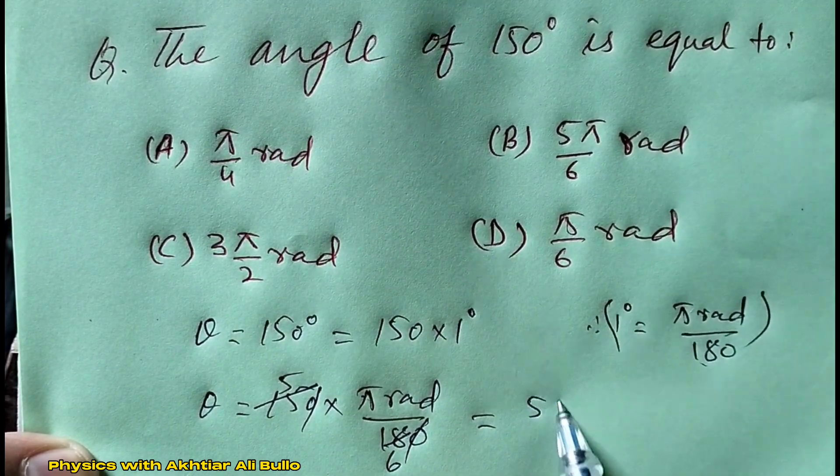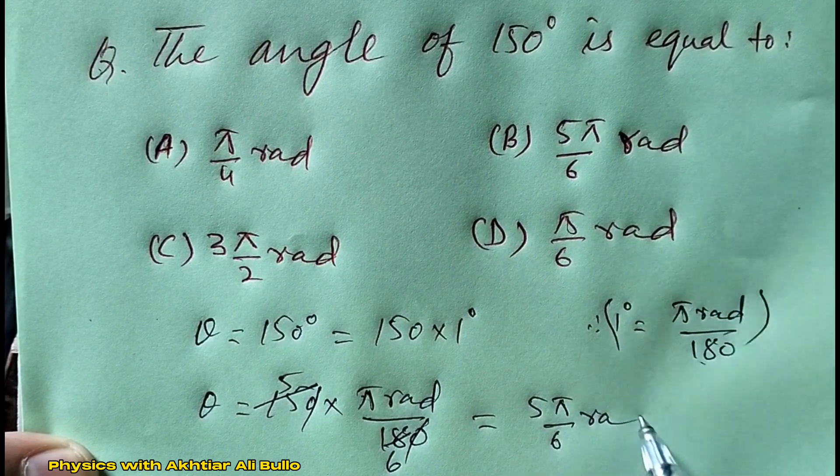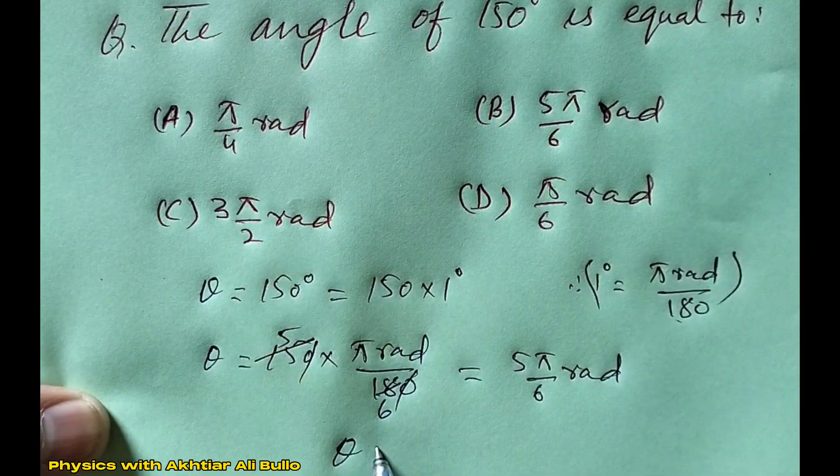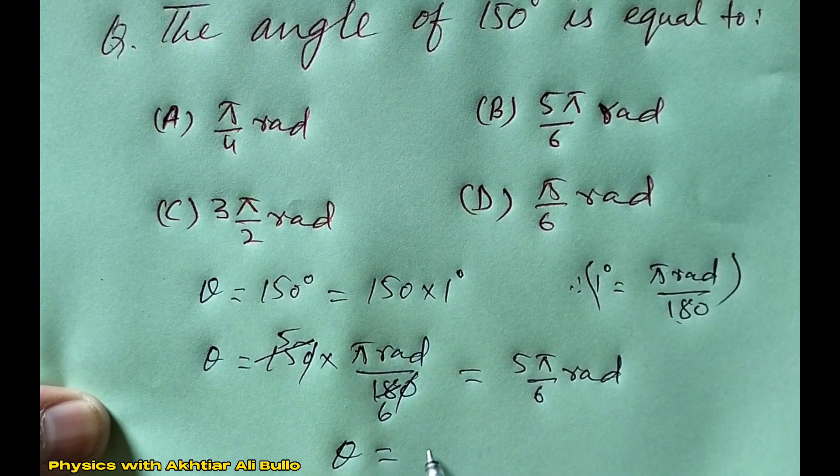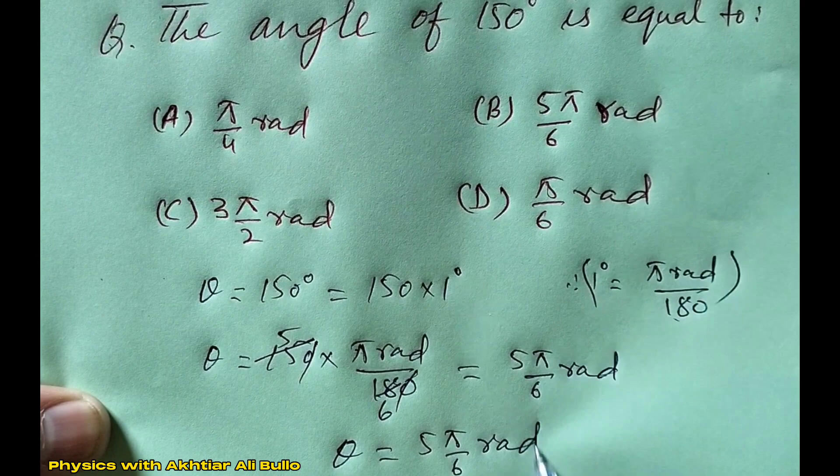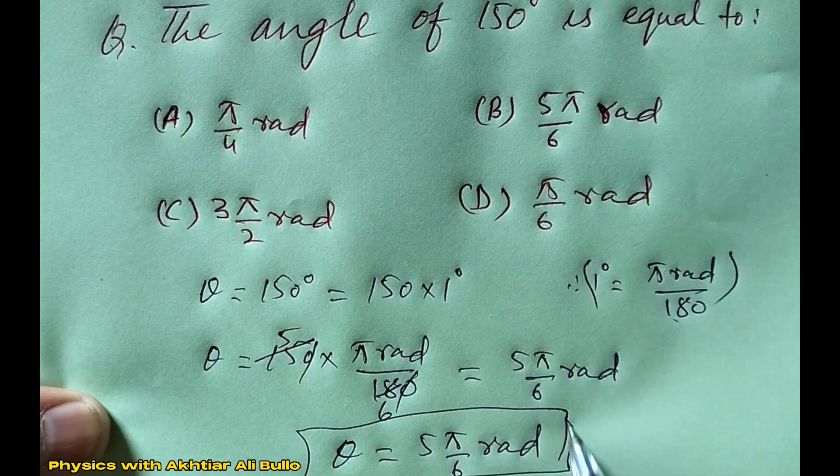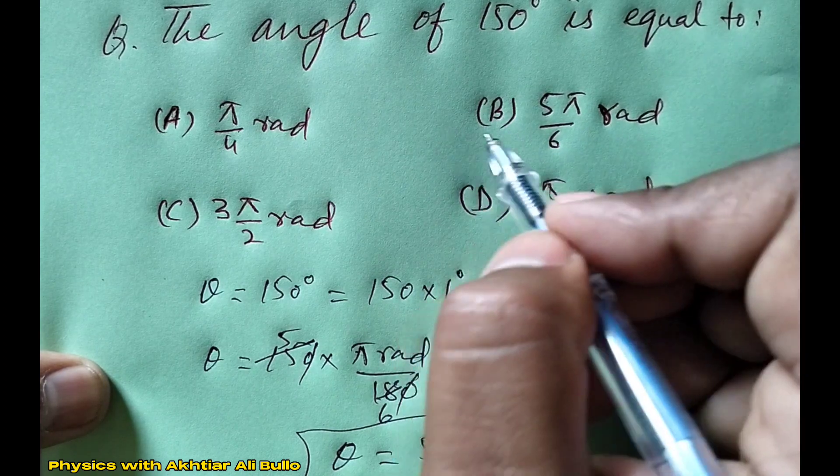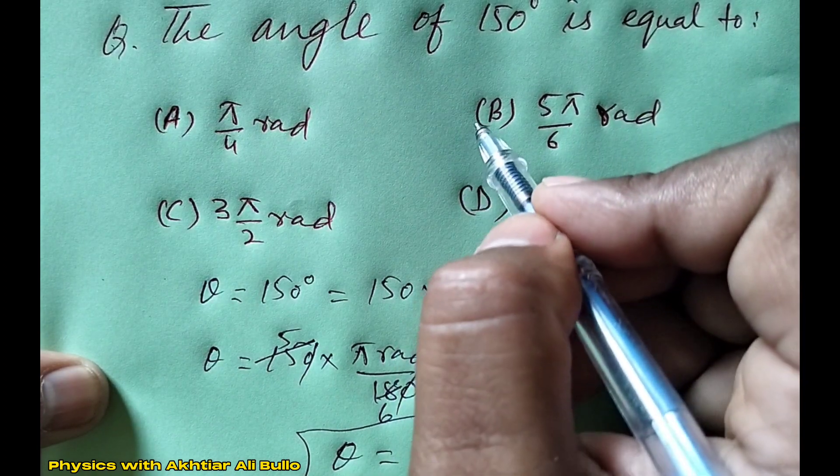This means the angle of 150 degrees is equal to 5π/6 radian. Therefore, the correct option is B: 5π/6 radian.